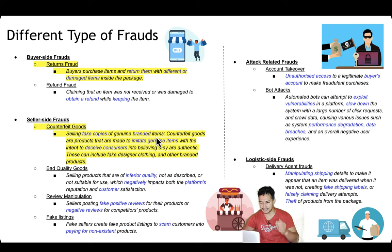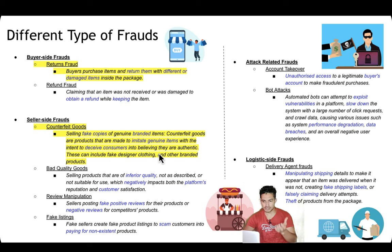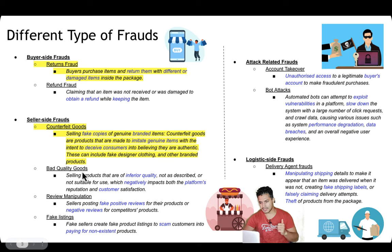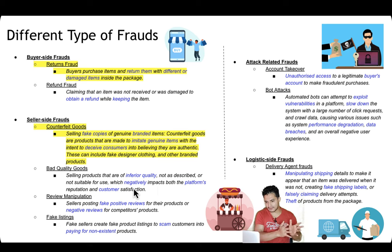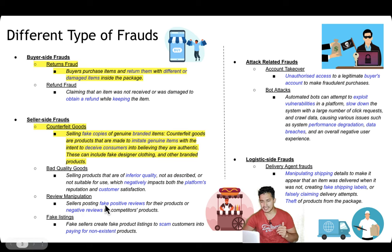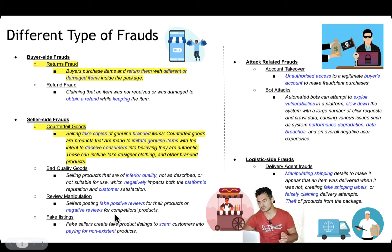There can also be seller-side frauds. Counterfeit goods: a seller can sell fake copies of genuine branded items — counterfeit goods are created to imitate genuine items with an intent to deceive the customer, who may buy them thinking they are authentic when they are actually fake. This can include fake designer clothing and other blended products. Another seller fraud is bad quality products — selling products of inferior quality, not as described, which negatively impacts the platform's image and customer satisfaction. Sellers can also do review manipulation — posting fake positive reviews for their own products or negative reviews for competitors.